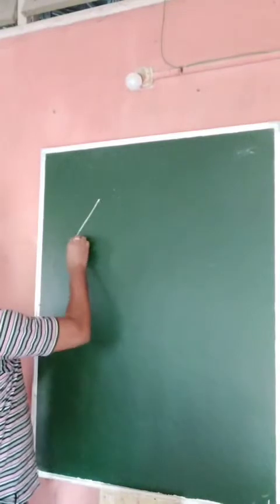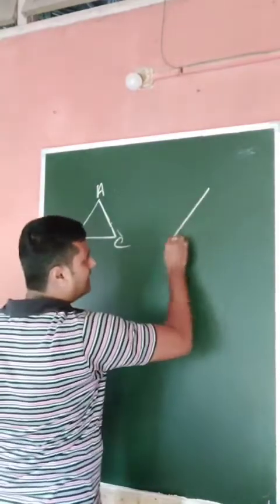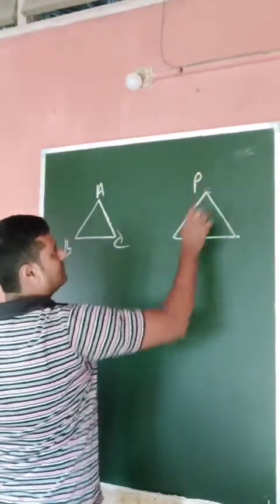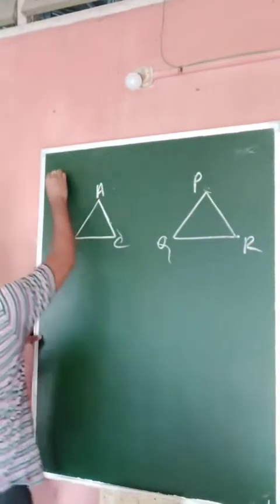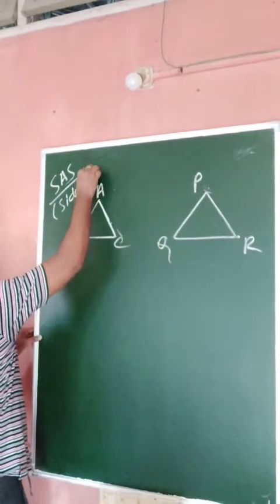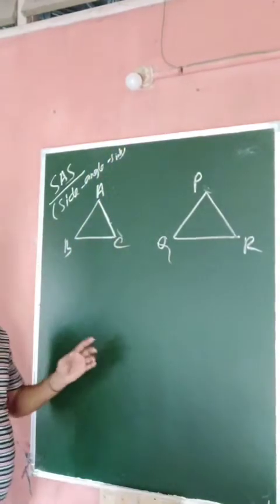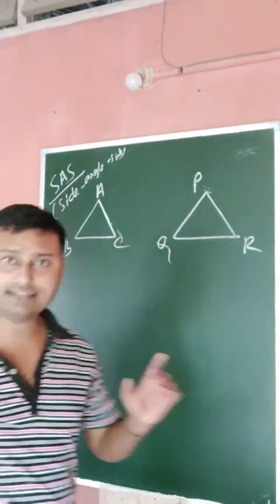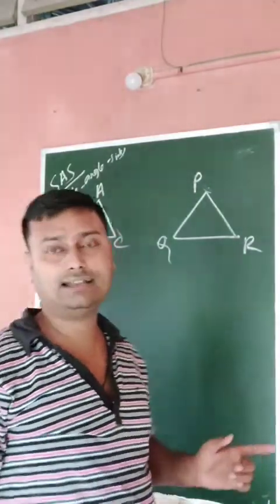Suppose there are two triangles — triangle ABC and triangle PQR. The first criterion is SAS. SAS stands for Side, Angle, Side. That means you have to take one angle in between two sides.